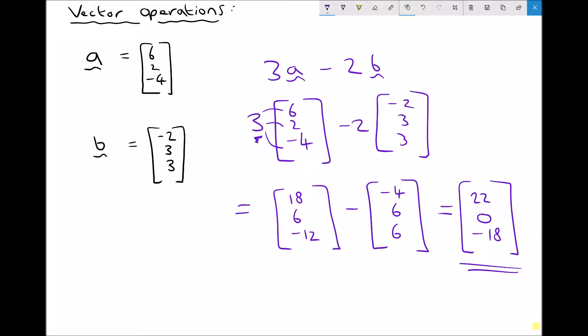If we were asked to find the magnitude of 3A minus 2B we could also do that. So we have the magnitude of 3A minus 2B. And that would be the square root of our new vector. So the square root of 22 squared plus 0 squared plus minus 18 squared.